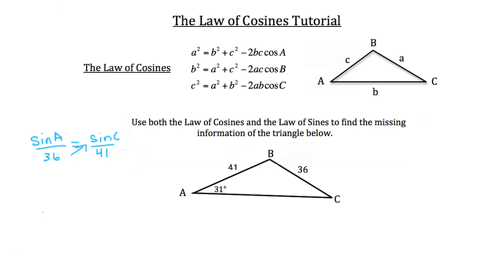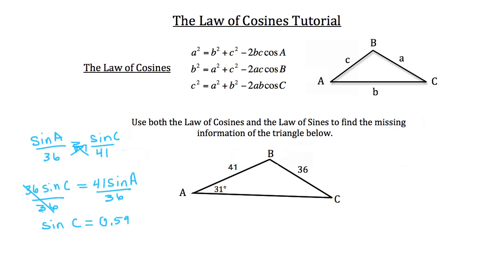Then we cross multiply, so we have 36 times the sine of angle C is equal to 41 times the sine of angle A. We want to solve for C, so I'm going to divide both sides by 36. The 36 cancels on the left, and we have the sine of angle C is equal to roughly 0.59. Now I want to get rid of that sine, so I'm going to take the inverse sine of both sides. We get angle C alone, and angle C is equal to roughly 36 degrees.